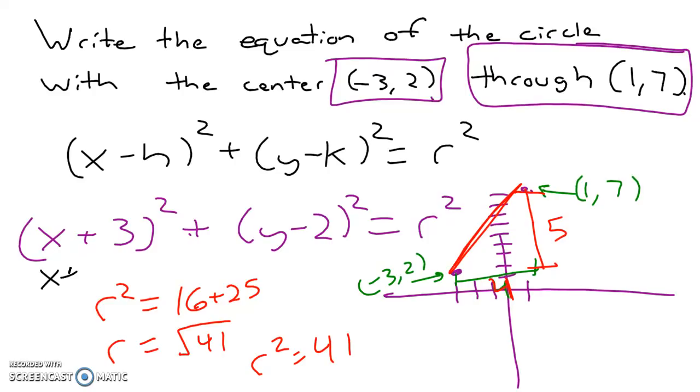Our final answer here is x plus 3 squared plus y minus 2 squared equals 41. 41 is the radius squared. That concludes the lesson on 9.1, graphing the circle.